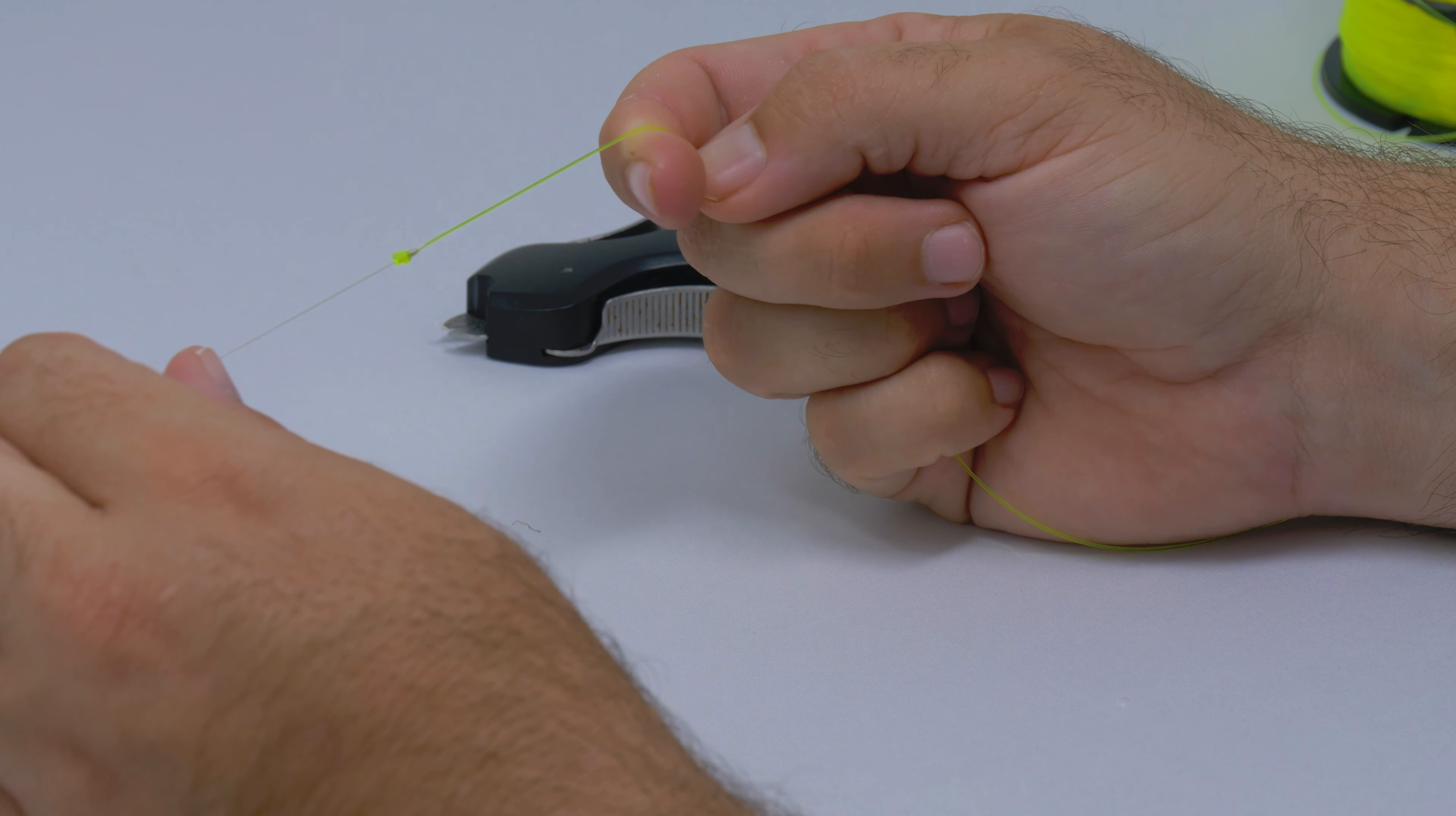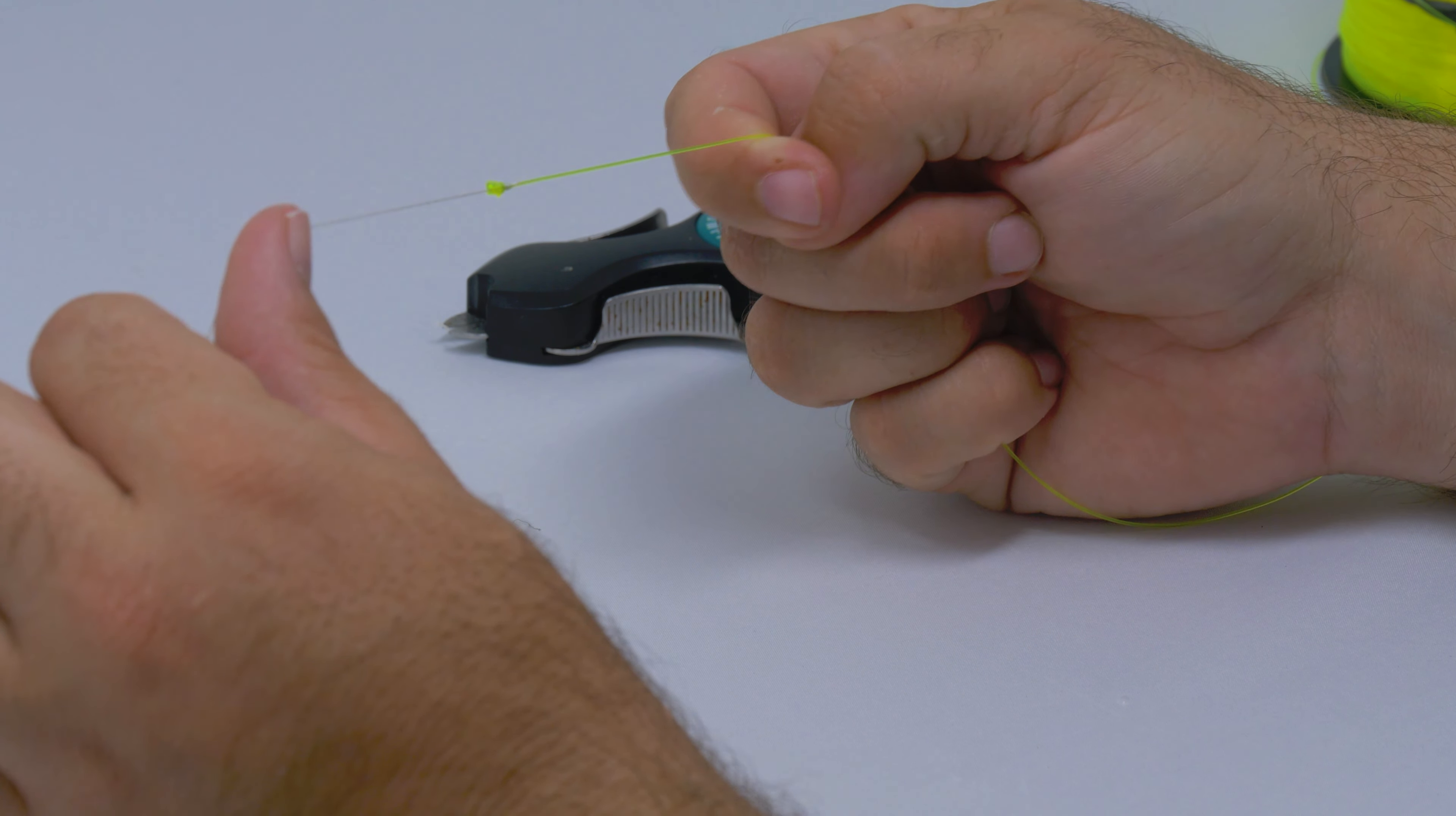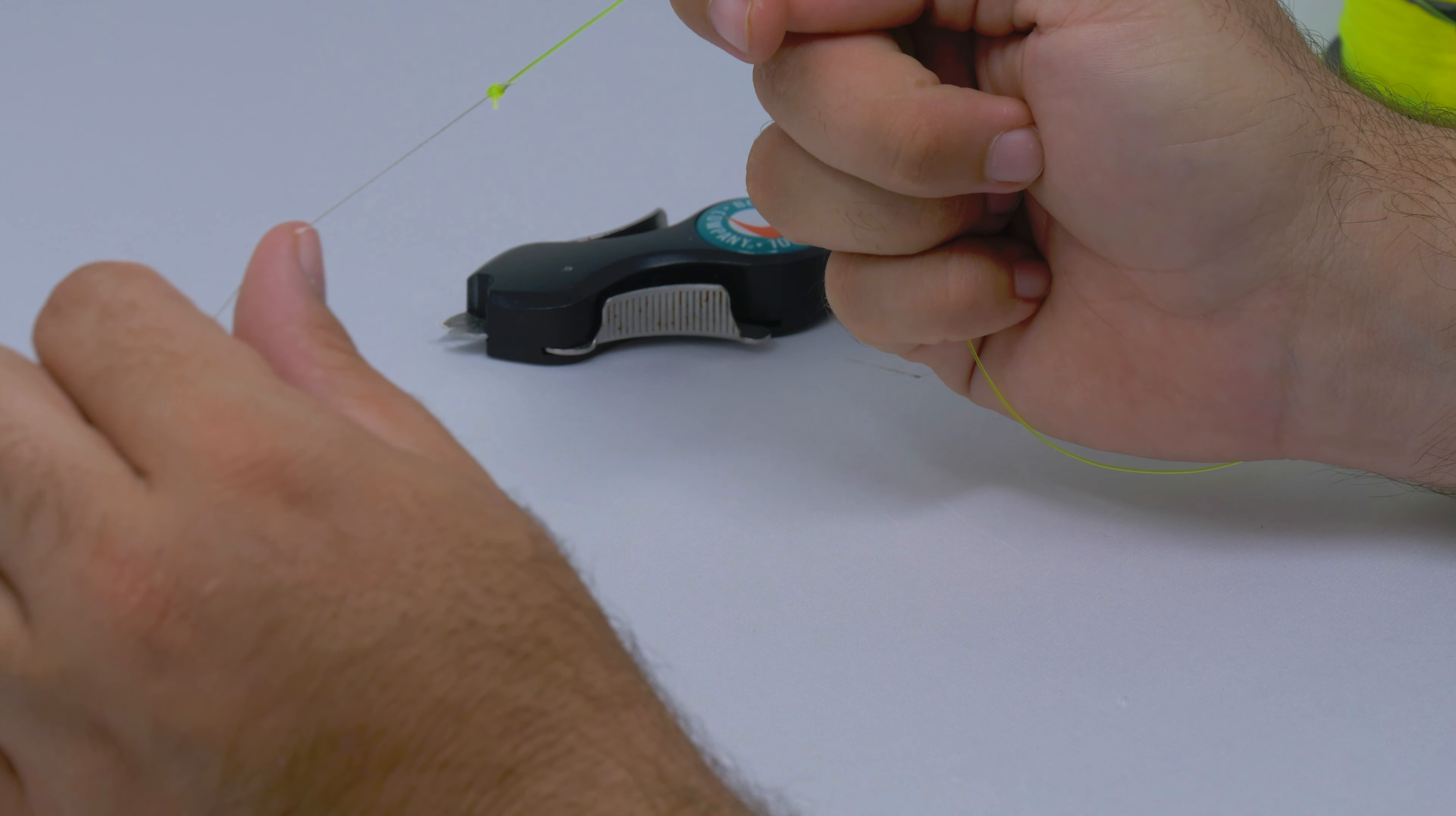As you can see, you can tie it very quickly and it's a simple knot. This is perfect to use in applications for fly fishing, live baiting, or lure applications. So put it to use.